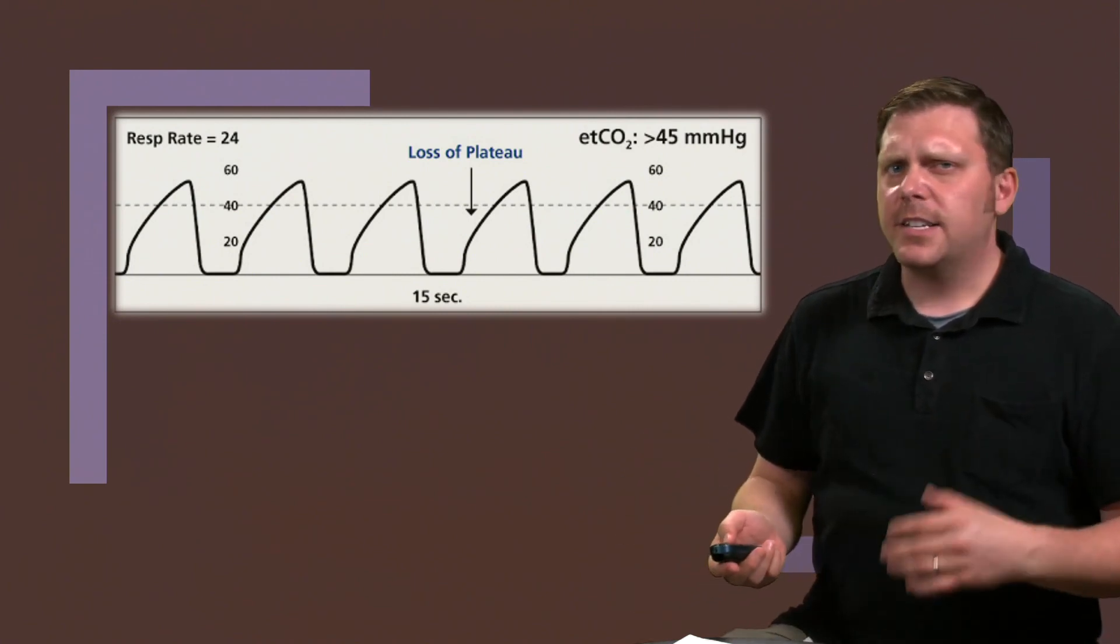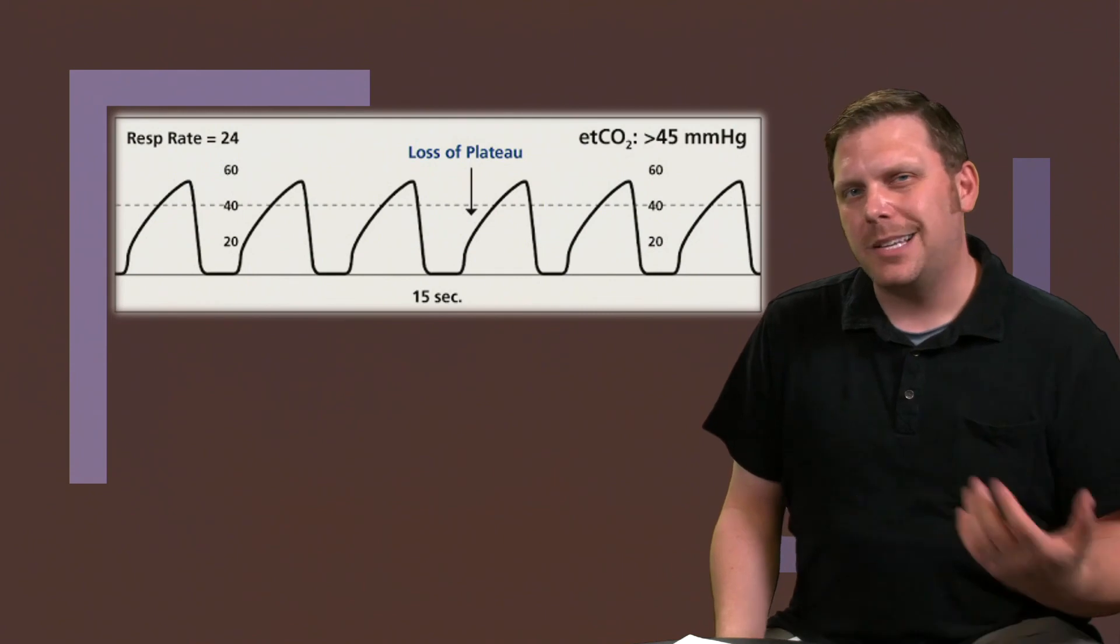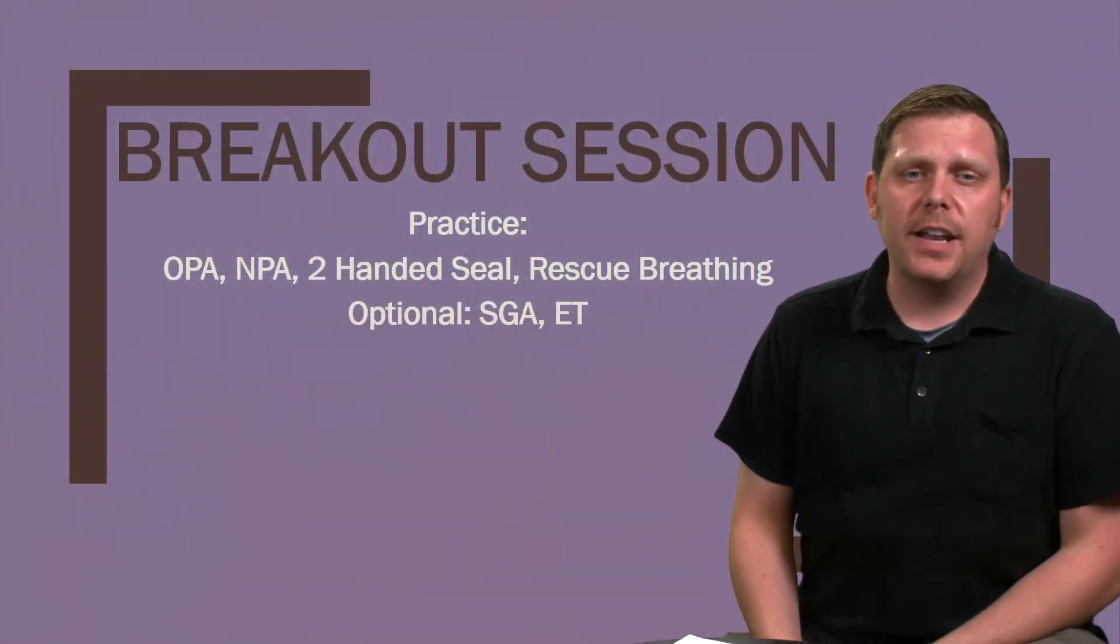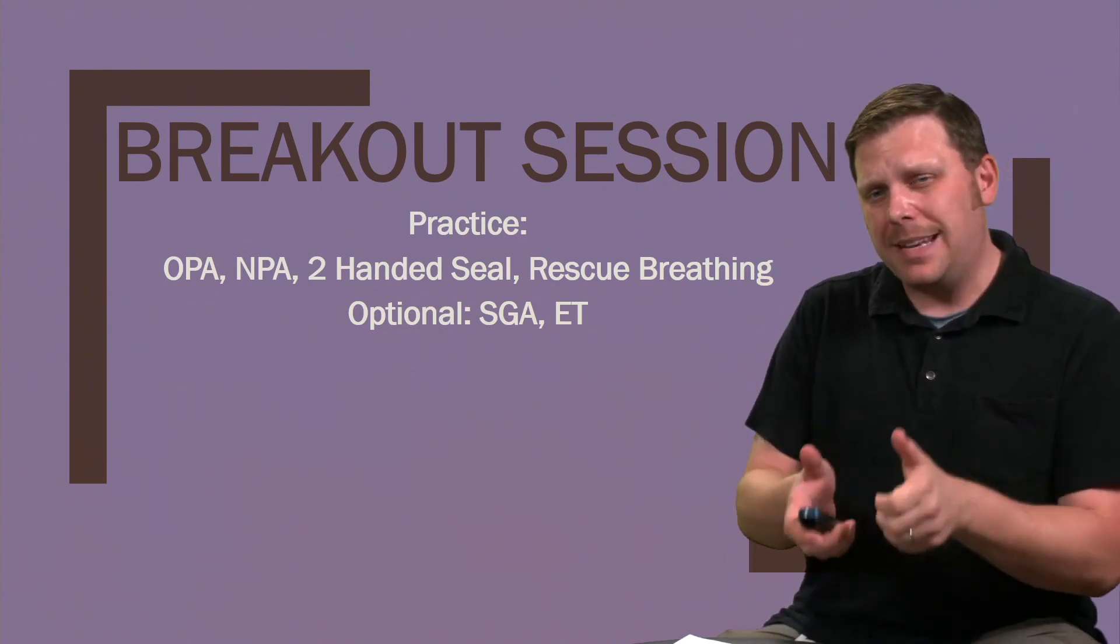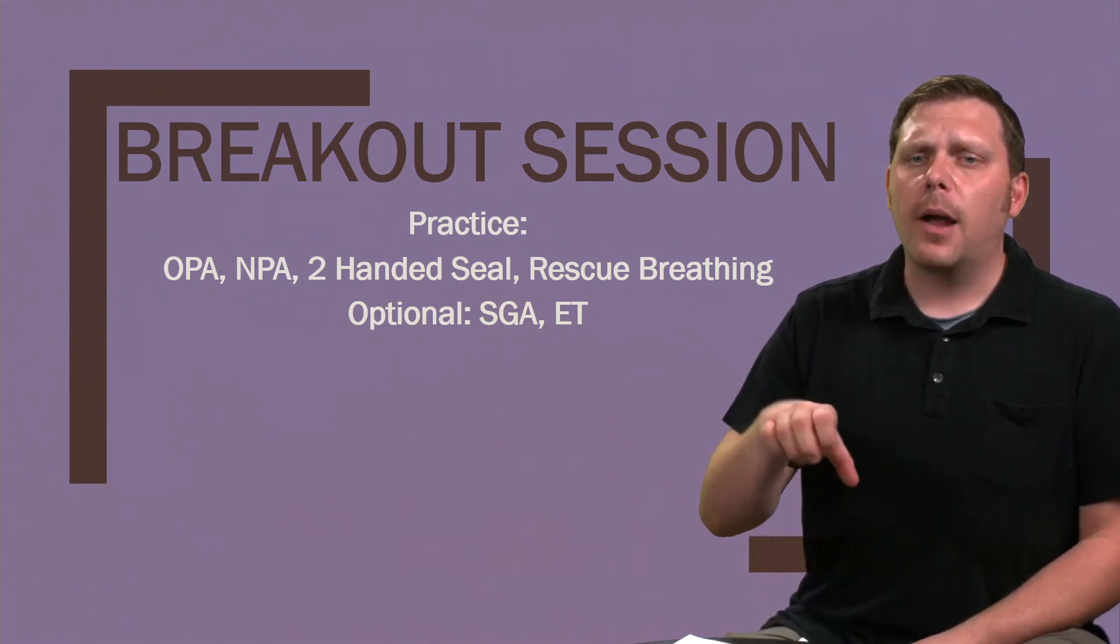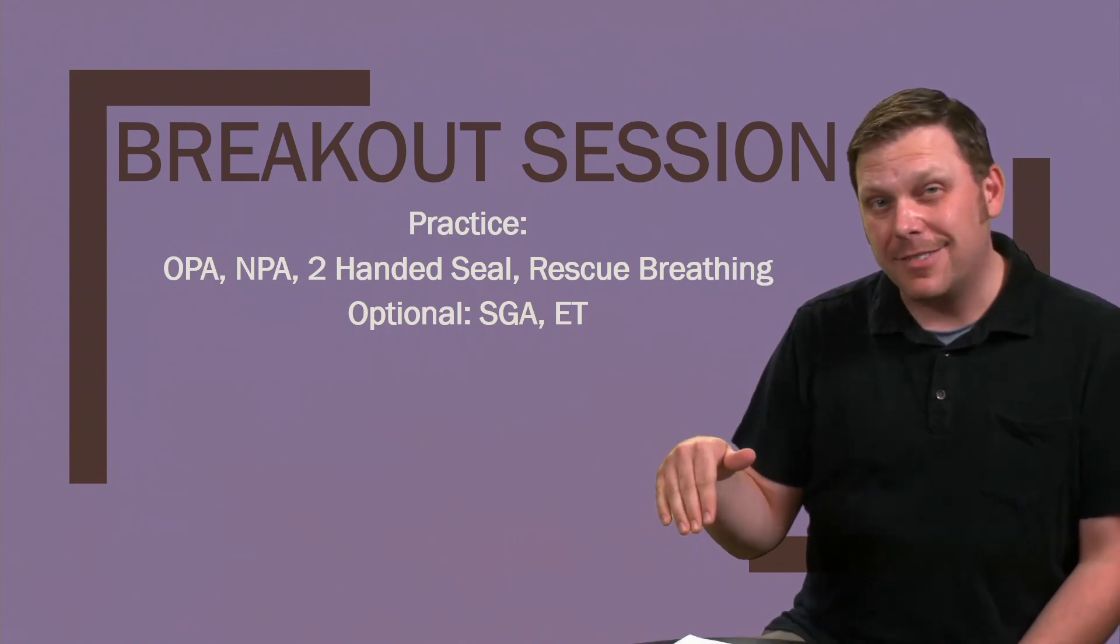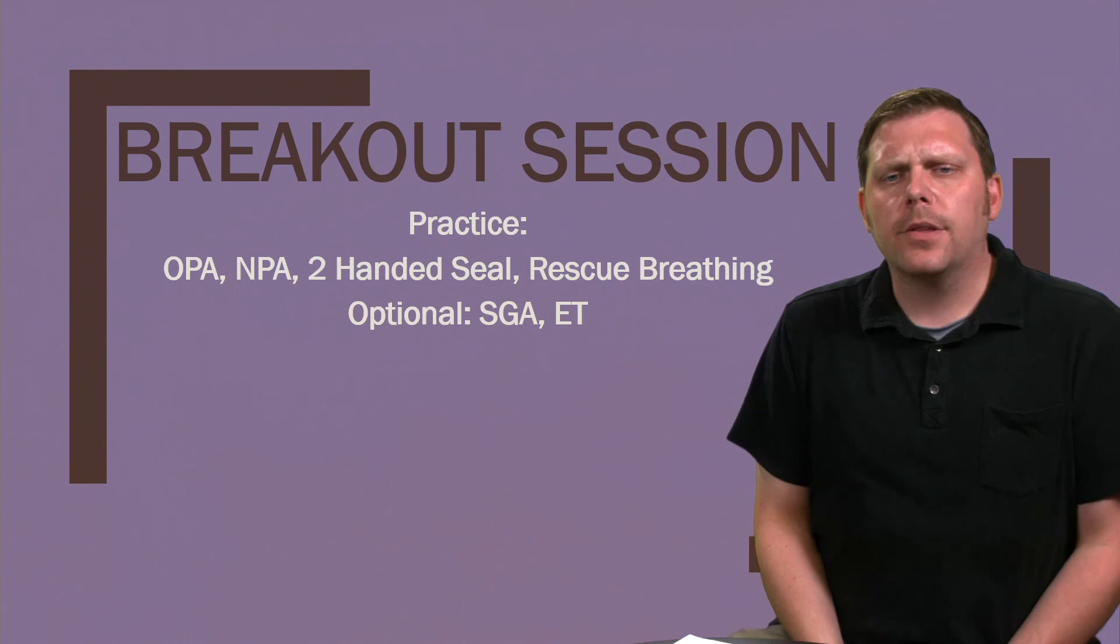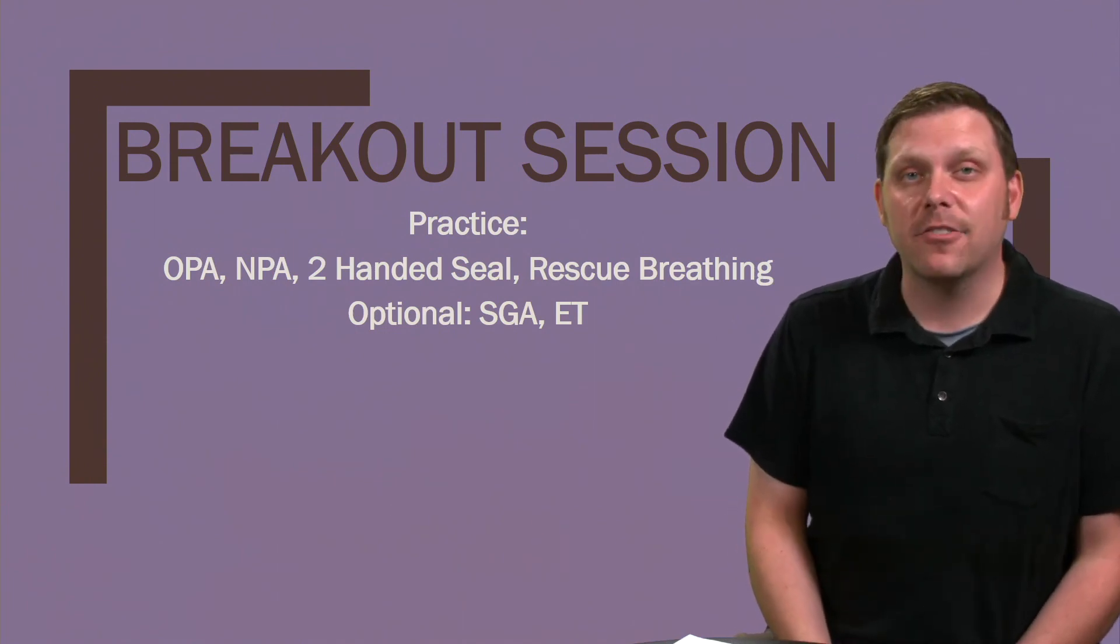Those are the main devices, main airway and pathophysiology behind some of that. If you have any questions, please ask one of your instructors. We're going to be going into a breakout session now and in this we want you to practice the OPA, the NPA. Make sure we're maintaining that two-handed seal with the BVM at all times. Practice your rescue breathing, one second breaths, one every three to five seconds. And then optional, you might be able to play with a supraglottic airway or an end-tidal. Practice with those as you can. Thank you for your time.